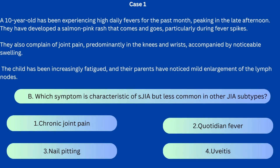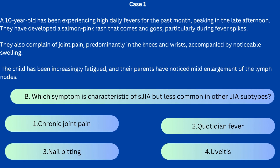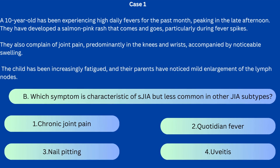Question B: Which symptom is characteristic of systemic juvenile idiopathic arthritis but less common in other JIA subtypes? 1. Chronic joint pain, 2. Quotidian fever or daily fever, 3. Nail pitting, 4. Uveitis. The correct answer is 2 — quotidian fever or daily fever — with a typical spike in the late afternoon or evening, which is a distinctive feature of systemic onset juvenile idiopathic arthritis.